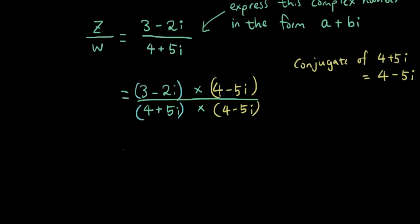Then what happens is the bottom, the denominator of this fraction, will turn into a real number as we've shown you in the previous tutorial. And that will help us to get it in the form of a plus bi and then we can draw it on our Argand diagram. So let's try that here.